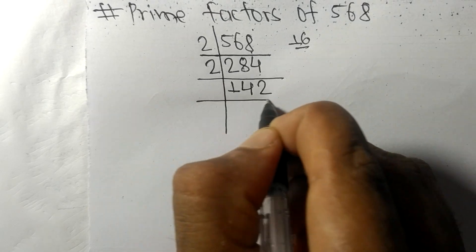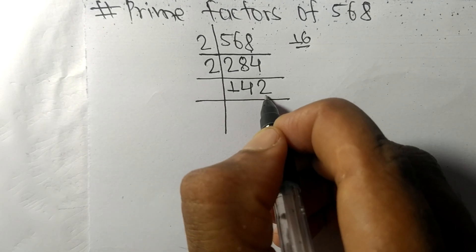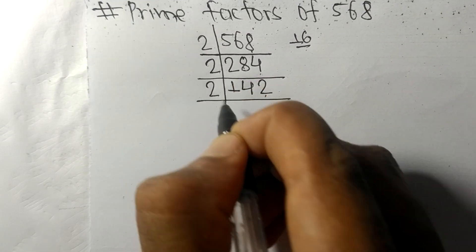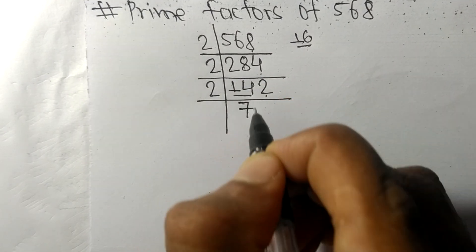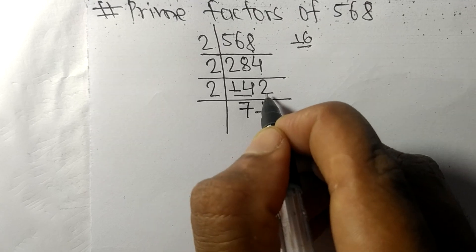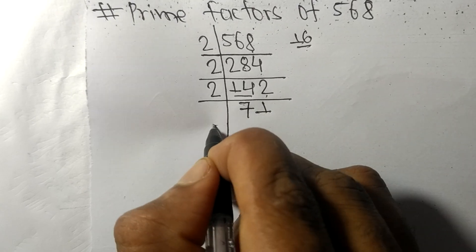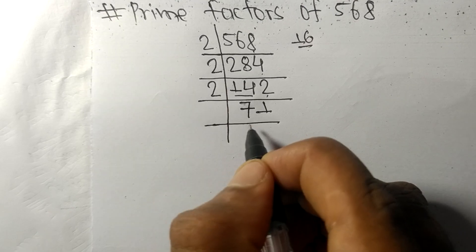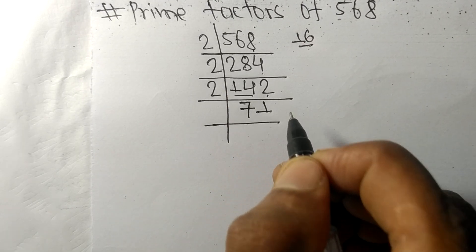Again we have even number 2 at last, so it is divisible by 2. 2 times 7 equals 14, 2 times 1 equals 2. Now we got 71, which is a prime number, so it is divisible by 71 itself.